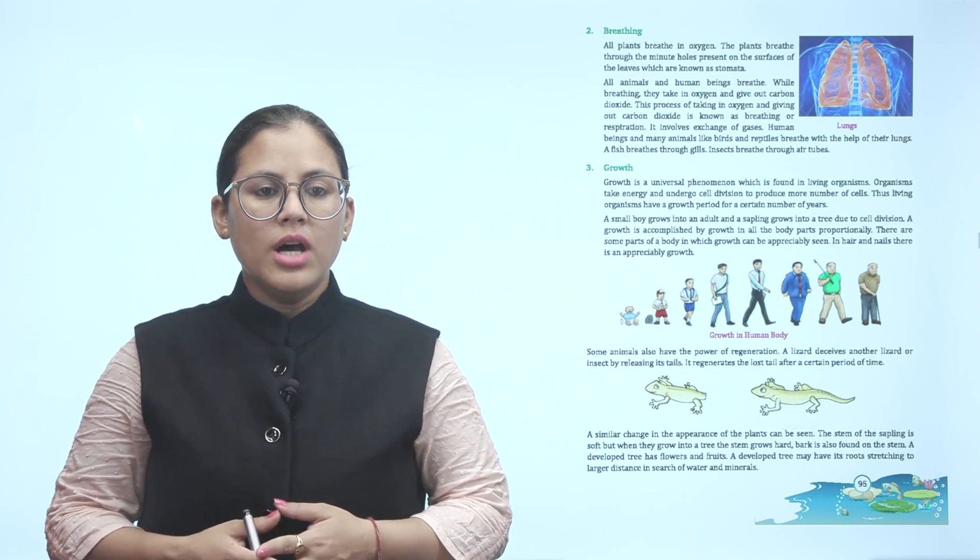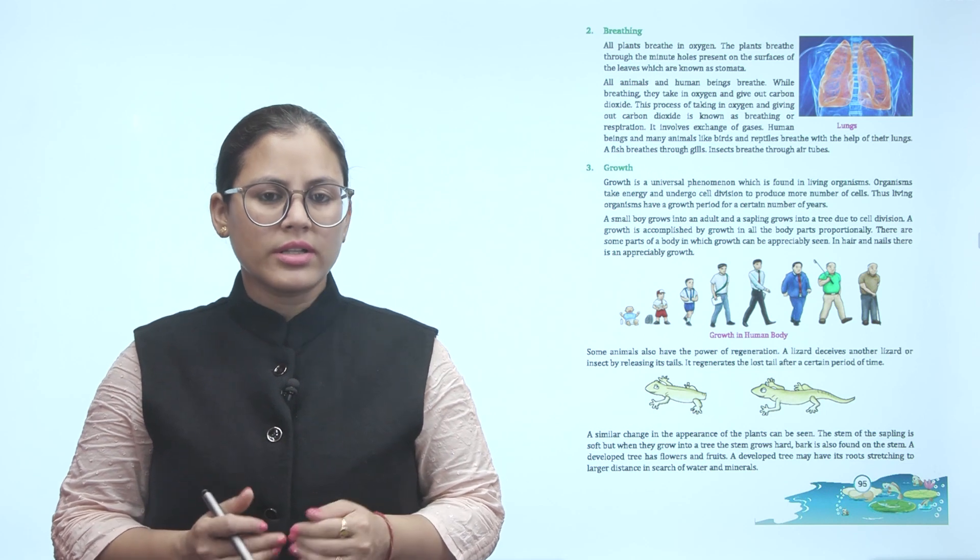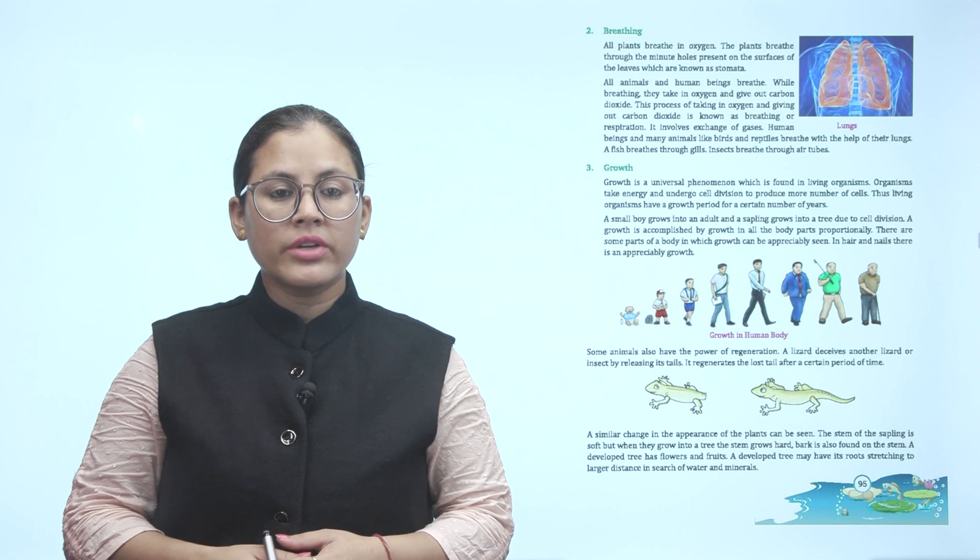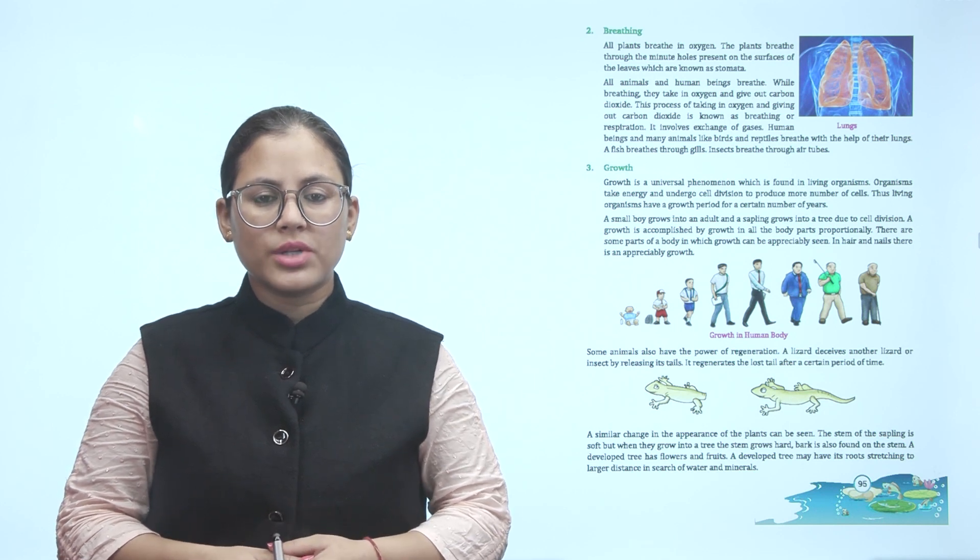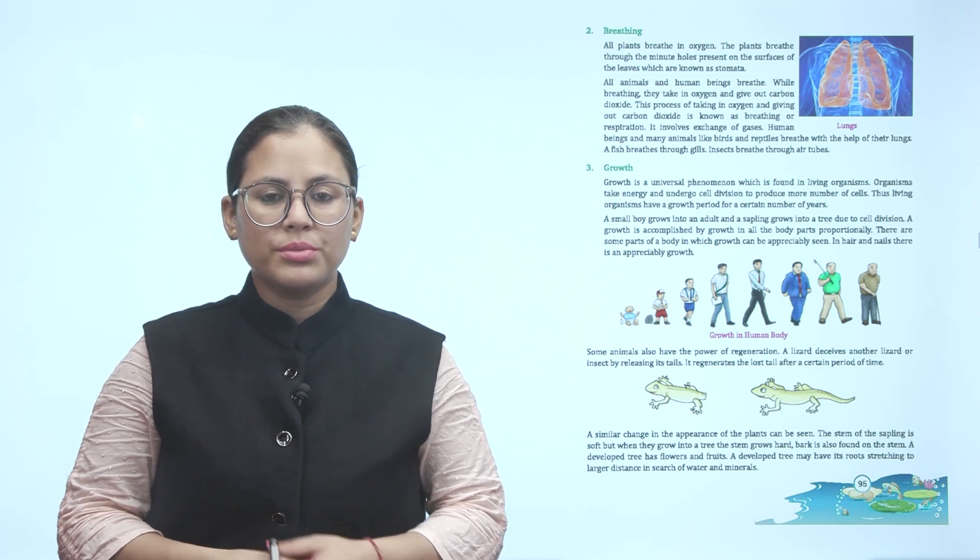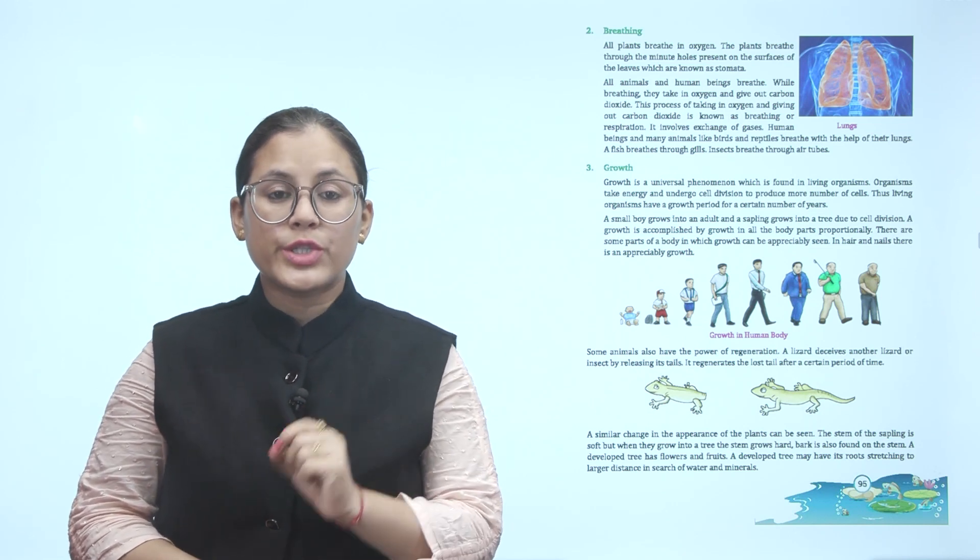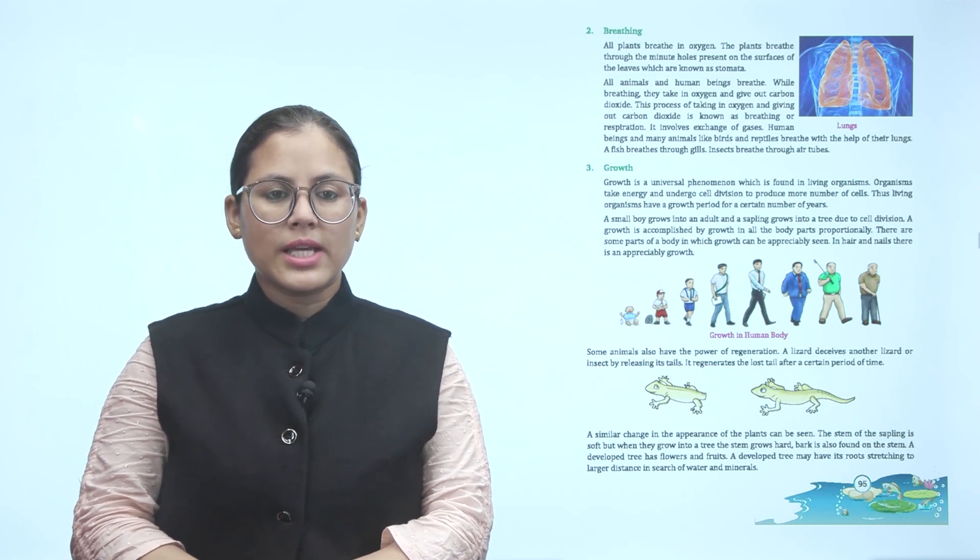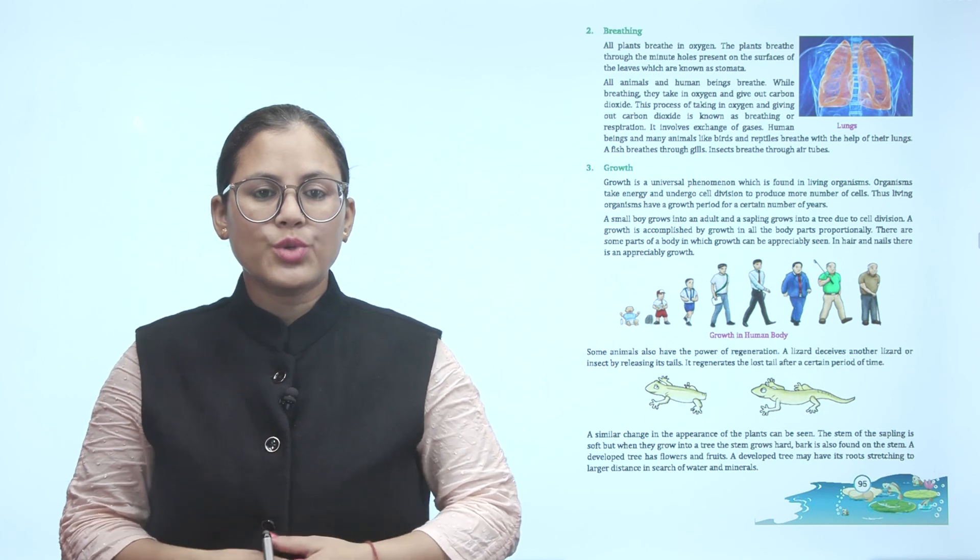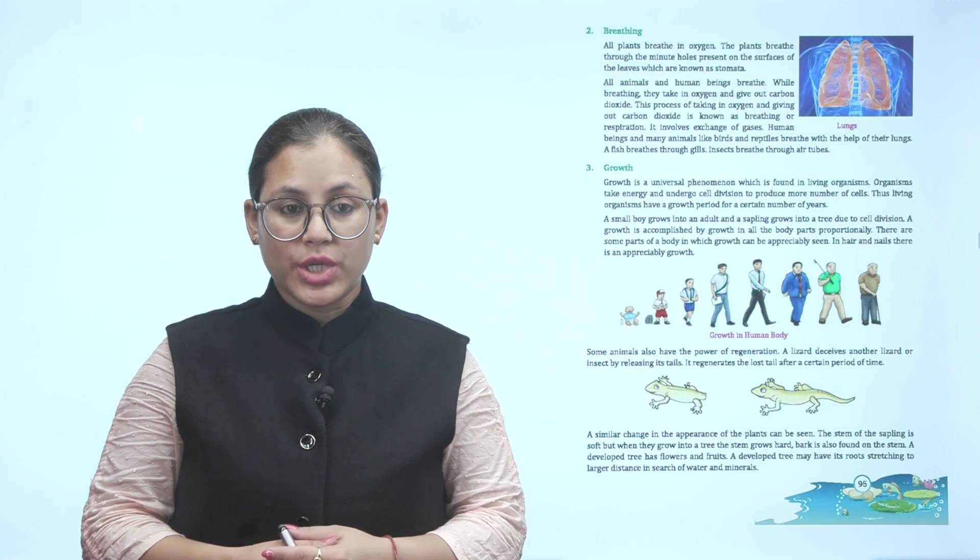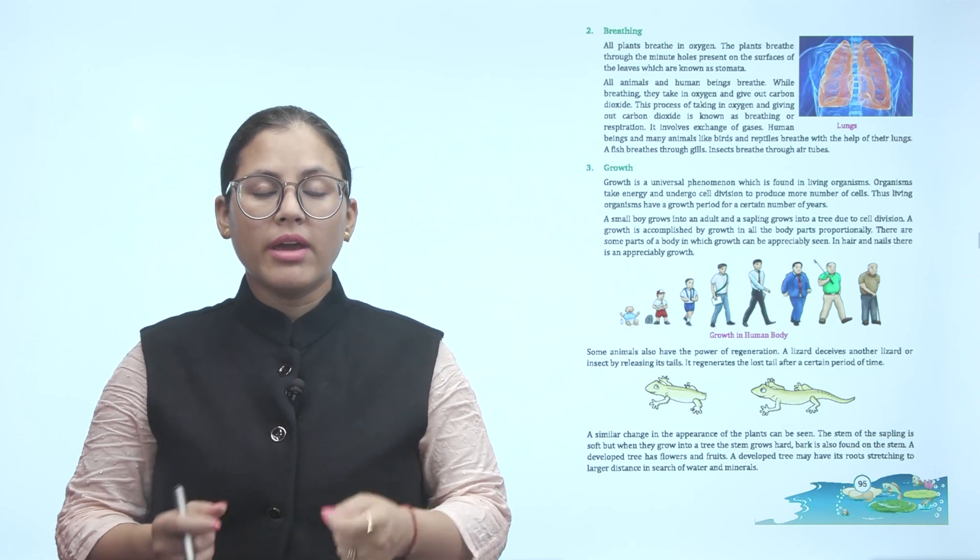Breathing. All plants breathe in oxygen. The plants breathe through the minute holes present on the surface of the leaves which are known as stomata. All animals and human beings breathe. While breathing they take in oxygen and give out carbon dioxide. This process of taking in oxygen and giving out carbon dioxide is known as breathing or respiration. It involves exchange of gases. Human beings and many animals like birds and reptiles breathe with the help of their lungs. A fish breathes through gills. Insects breathe through air tubes.